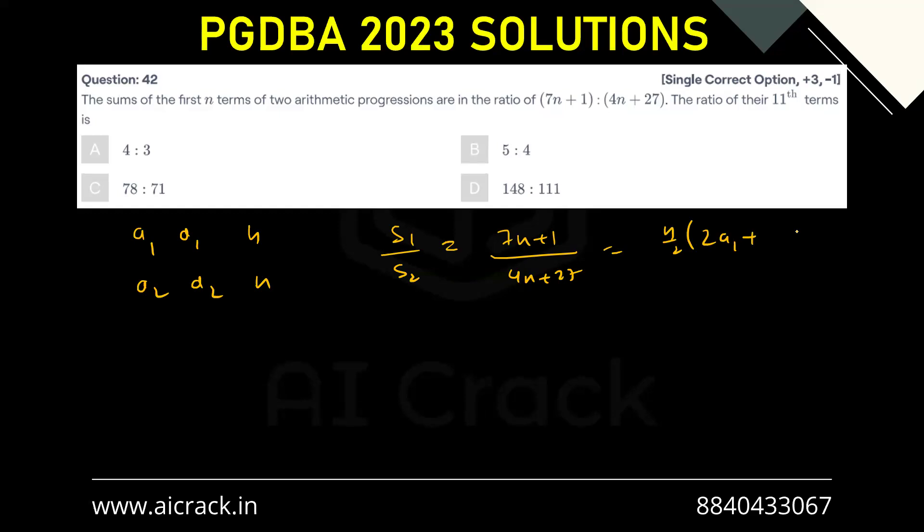2a1 plus n minus 1, d1 divided by n by 2, 2a2 plus n minus 1, d2. So this gets cancelled.